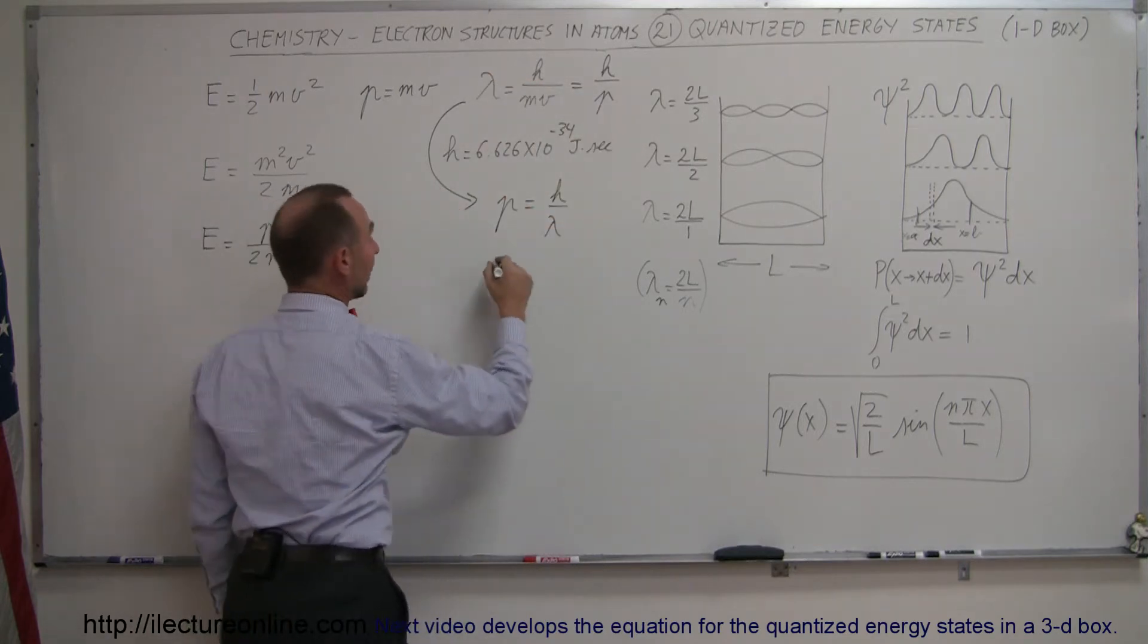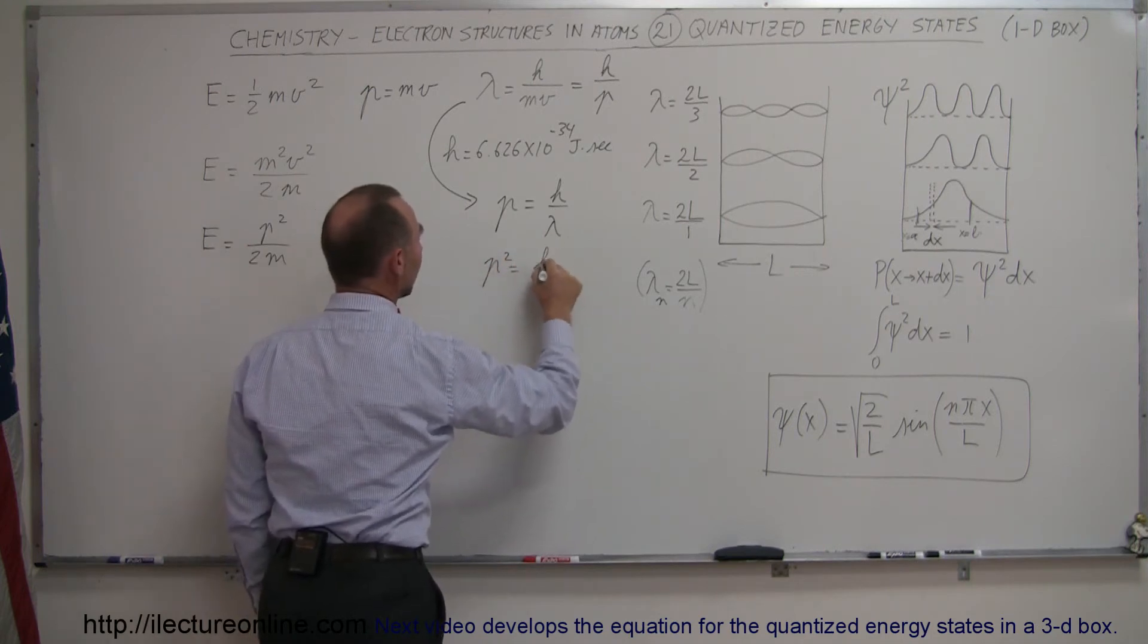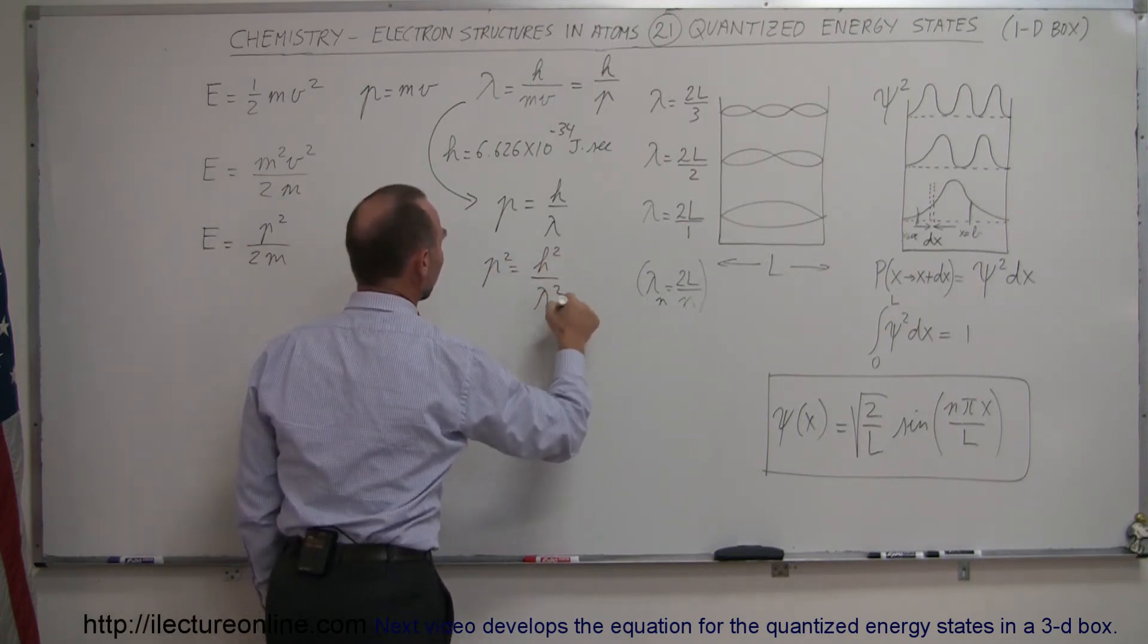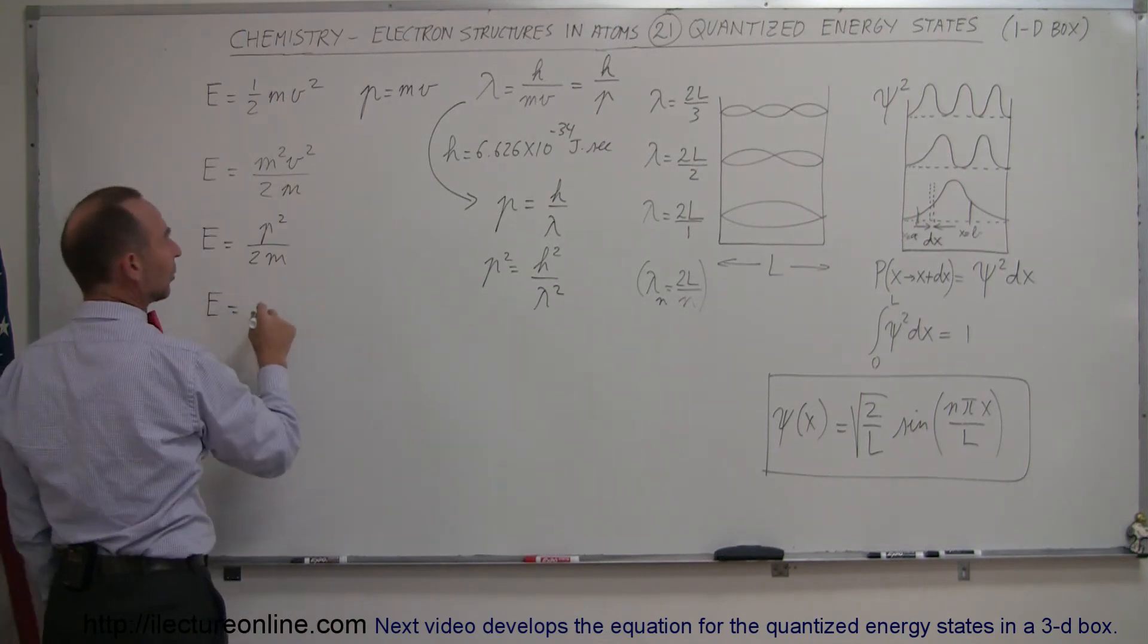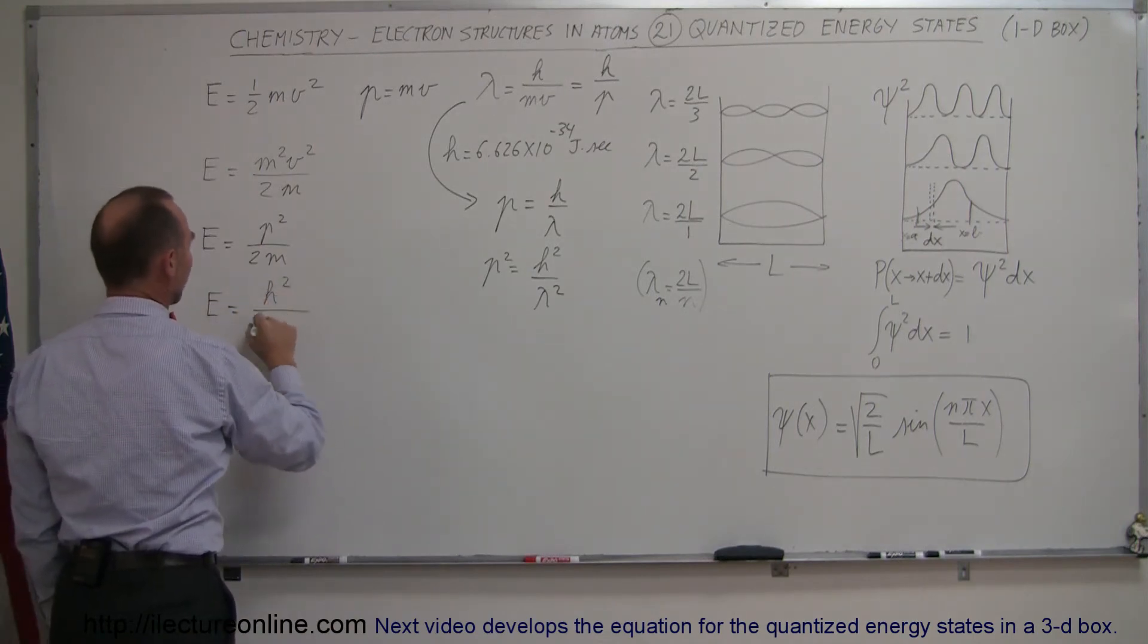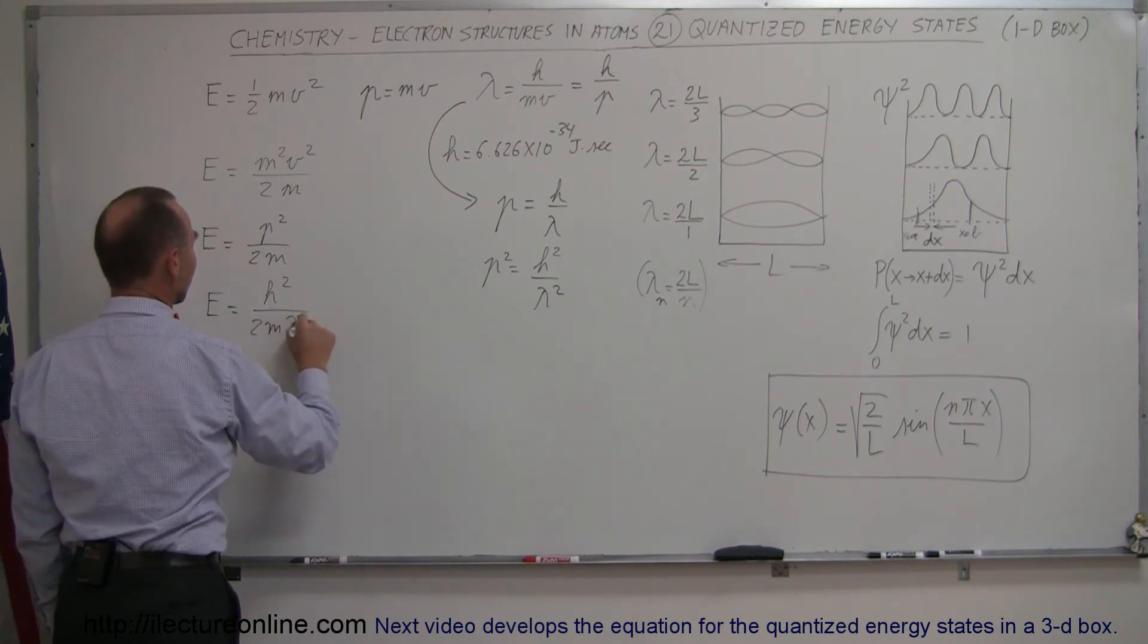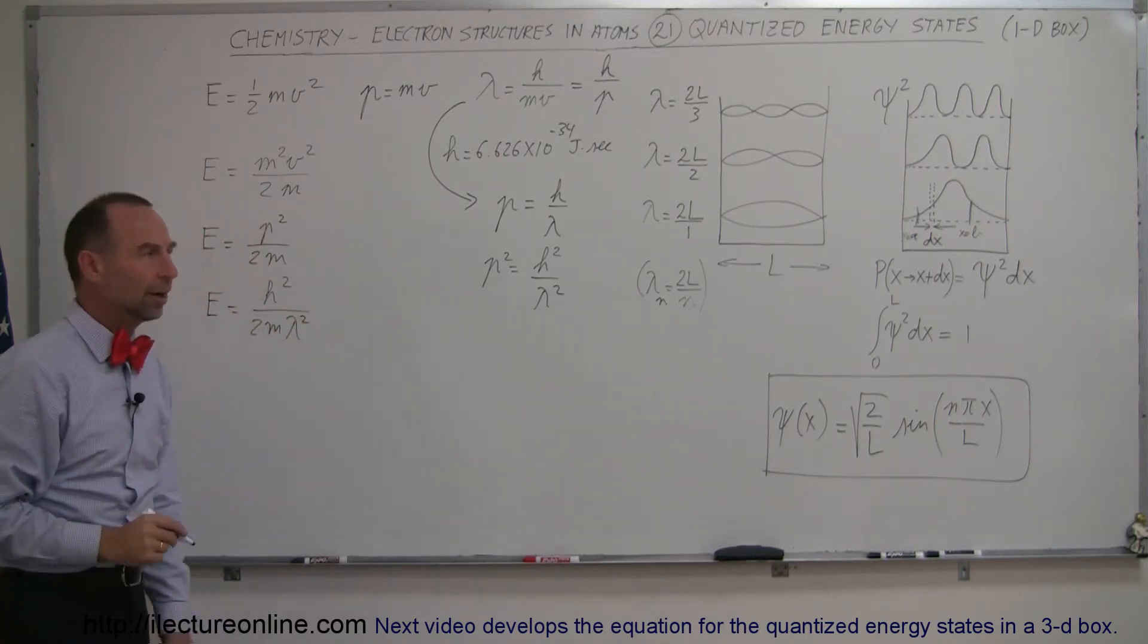Now, if I square that, I get p squared is equal to h squared divided by lambda squared. And if I plug that in here, I get the energy of a particle is equal to, that becomes h squared divided by 2m times lambda squared. We're almost there.